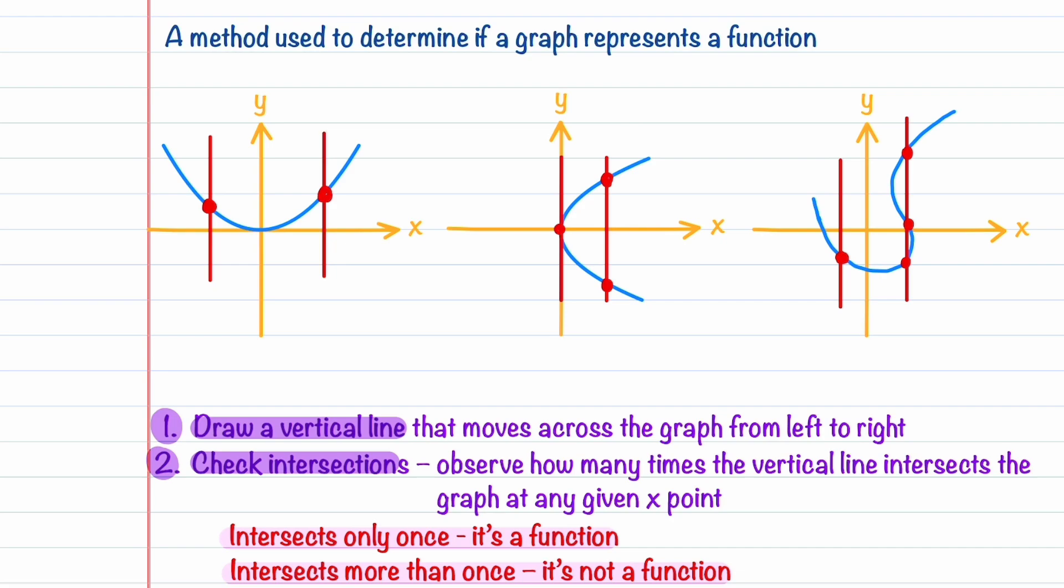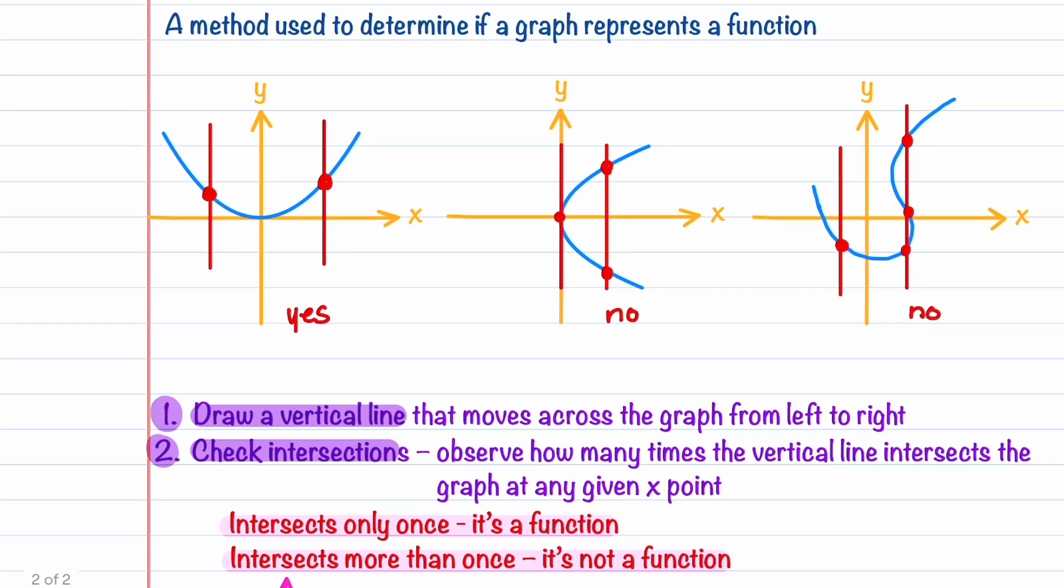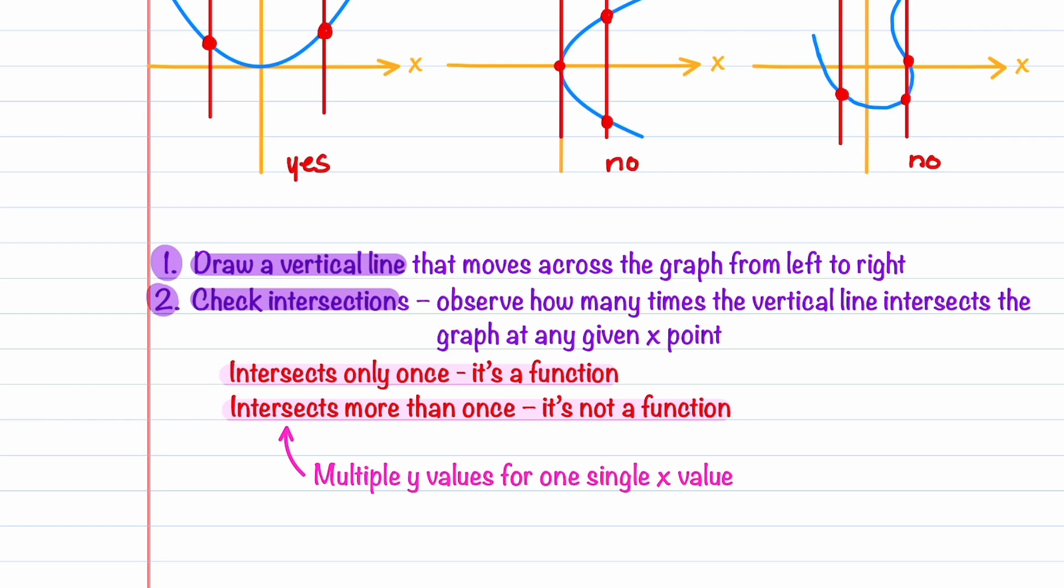So let's summarize this. Our first graph represents a function, so we'll put a yes there. Our second graph and our third graphs do not represent functions, so we'll put no's there. Just remember that if our vertical line intersects our graph more than once, we have multiple y values for one single x value, and our graph does not represent a function.